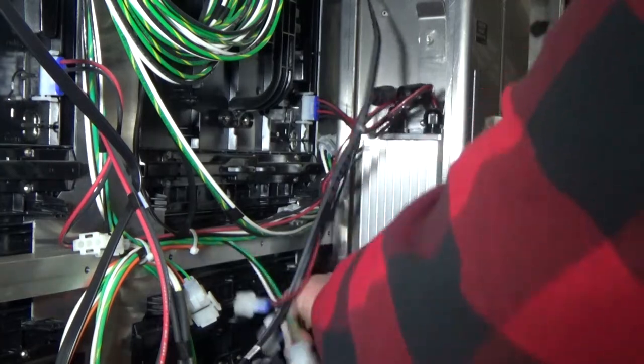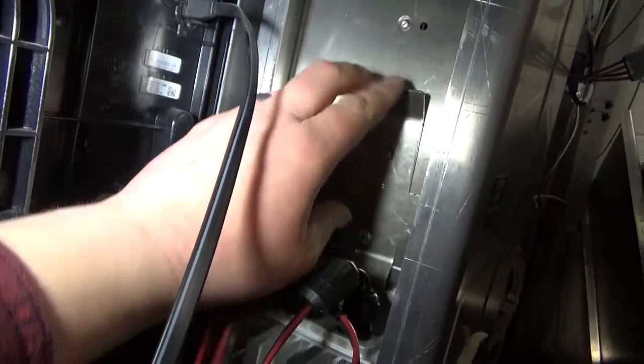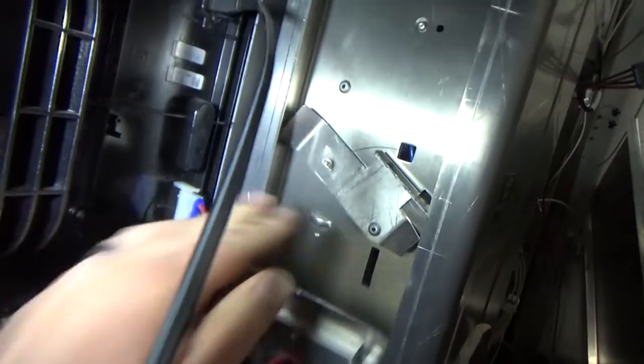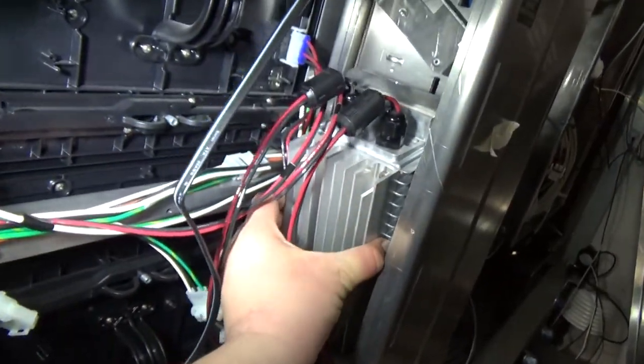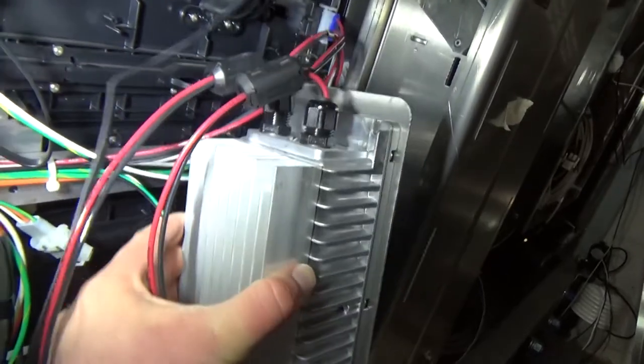While holding the power supply against the upright, rotate the power supply bracket release tab counterclockwise off of the power supply. Gently lift the power supply assembly off the upright.